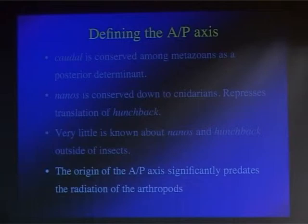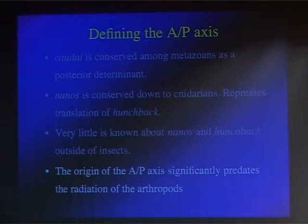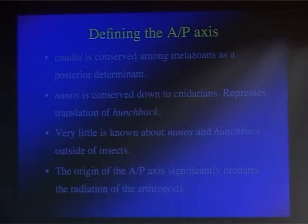This is a very important point. The origin of the anterior-posterior axis — the fact that an anterior-posterior axis exists at all — definitely predates the radiation of the arthropods, since all bilaterians inherently have an anterior-posterior axis. We can assume that this axis is ancient, and that the genes involved in generating it are ancient. This has nothing to do with segmentation. Whether you're segmented or not segmented, you have an anterior-posterior axis, and you probably use these same genes.